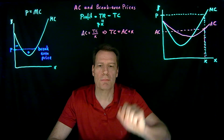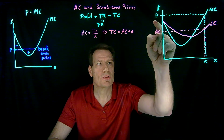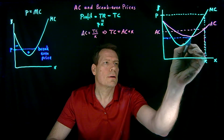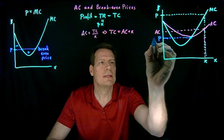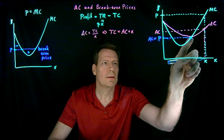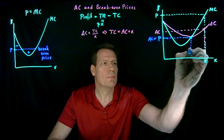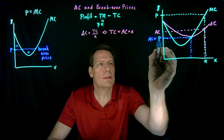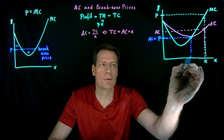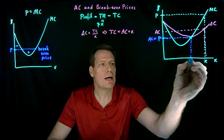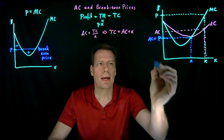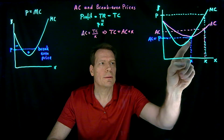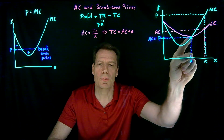Here we have a price where we're making a positive profit. But as price falls, the average cost and the price get closer to each other. Eventually, when the price hits the lowest point of the average cost curve, price equals average cost. At that point, the average cost when we produce that output is right off the average cost curve, equal to the price. Price times output gives us our total revenue box, and average cost times output also gives the same box. Our total revenue and total cost become identical — we've found our break-even price.